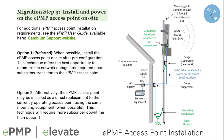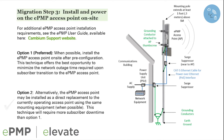Step 3, installation of the ePMP access point, involves two options. Option 1 includes co-locating the access point with the current fielded access point, allowing operators to simply power down the original equipment and power on the new ePMP access point. If additional mounting space is not available, operators may choose to replace the original access point with ePMP using the same mounting structures.